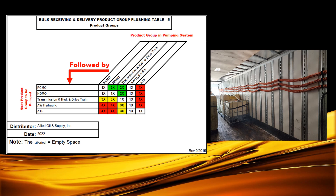For example, if you are going from an HGMO product to a PCMO product, you would need to flush two times the reduced common volume. But if you were going from a PCMO to an ATF, you would need to flush four times the amount. Now let's hand it over to Jordan and Roger for the correct way to flush, whether you're in the warehouse or in a delivery unit.